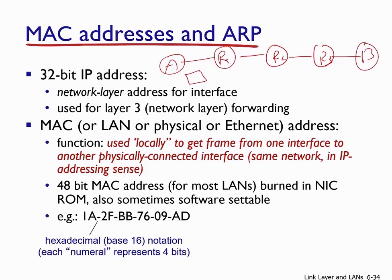In the first stage, the frame is forwarded from A to R1 based on the MAC addresses of A and R1. In the second stage, from R1 to R2 based on their MAC addresses. In the third stage, from R2 to R3, and finally from R3 to B based on their respective MAC addresses. The MAC address is also called the LAN address, physical address, or Ethernet address. Its main function is to get a frame from one interface to another physically connected interface. The MAC address is a 48-bit address burned into the network interface card's read-only memory, though sometimes it is software-settable.